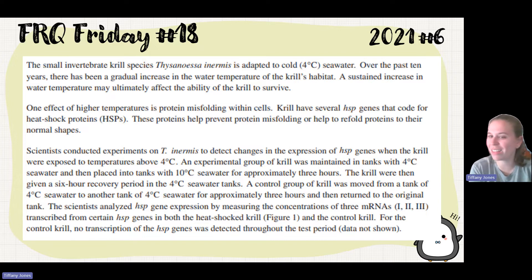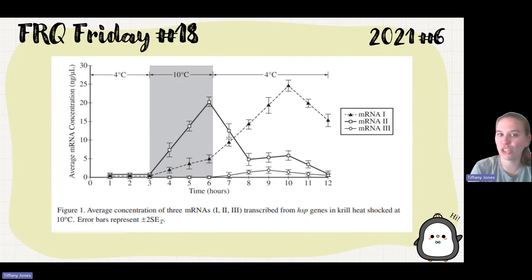Scientists conducted experiments to detect the changes in the expression of those krill at 4 degrees. They put them in 4 degrees Celsius, then they put them in 10 degrees Celsius for 3 hours, then they put them in a recovery period for 4 degrees Celsius. A control group was moved from a tank of 4 to another tank of 4 and back to the original tank of 4. And then they measured the concentration of 3 different mRNAs, 1, 2, and 3, that were transcribed from these different genes in both the heat shock krill as well as the control krill. They are showing us the transcription of those genes in a graph, but we do not see the control. That one is not shown.